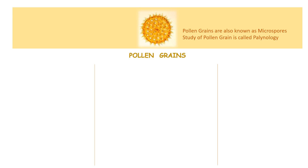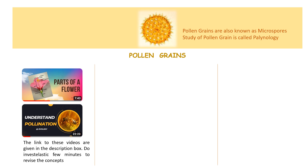Welcome to Jewology, a channel dedicated to making concepts in biology simple, easy to understand and interesting. In our previous topics we have seen the structure of flower. We have also studied about the different types of pollinations, where we understood that for sexual reproduction in flowering plants there is a process called pollination where the pollen grains are transferred from the anther to the stigma of the flowers. In this video we are going to delve a little more deeper into the pollen grains — we are going to see the structure of pollen grains and understand what happens during the germination of pollen grains.